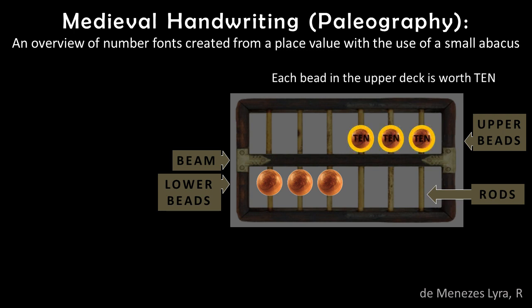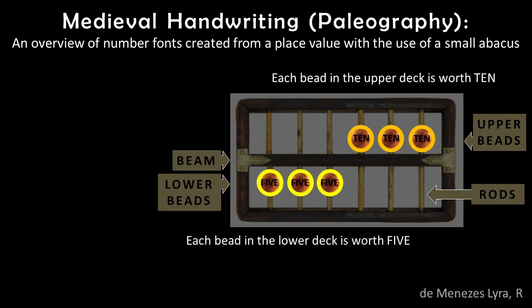The beads of the upper deck are used to count in base 10, so each bead in the upper deck is worth 10. The beads of the lower deck are used to count in base 5, so each bead in the lower deck is worth 5.